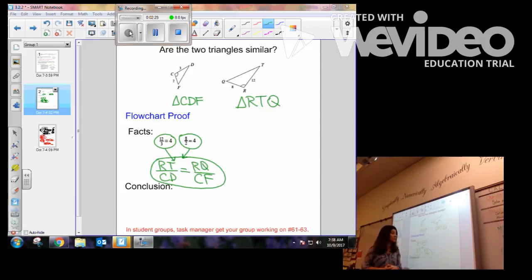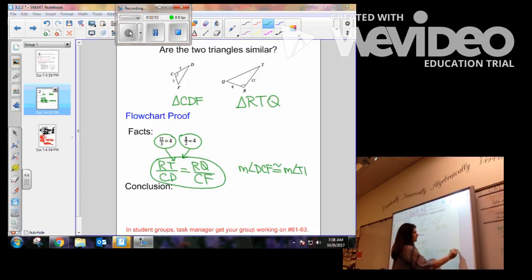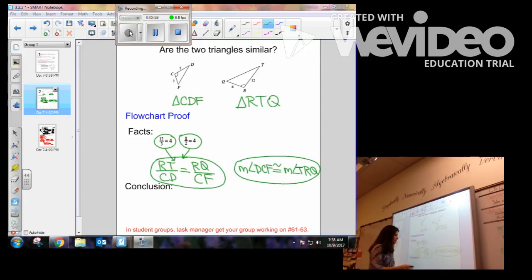So now we have proven two sides proportional. Now the angle between those two, we can notice is C for this CDF and is R for RTQ. And we are given that fact that the measurement of angle DCF is congruent to the measurement of angle TRQ. And that is also a given fact.